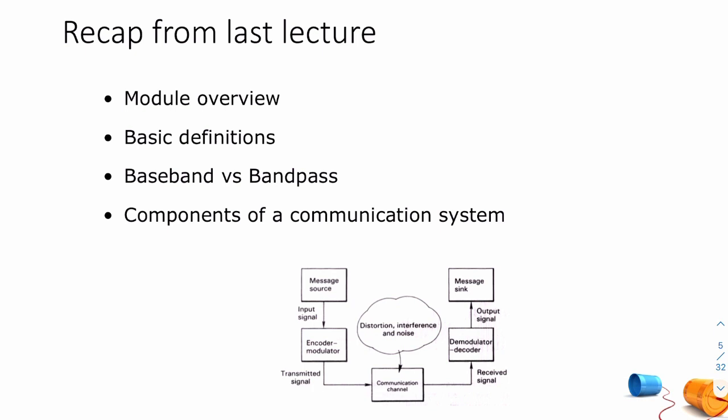Last week was an introduction to the module and some basic definitions. We distinguished between bandpass and baseband signals, and we introduced the block diagram of a communication system. It's very important to understand that the communication channel is where all the bad stuff happens — this is where our signal is most vulnerable. This is where distortion, interference, noise, attenuation, and all other things which affect the quality of our signal happen.